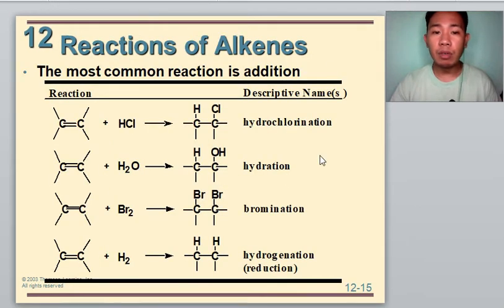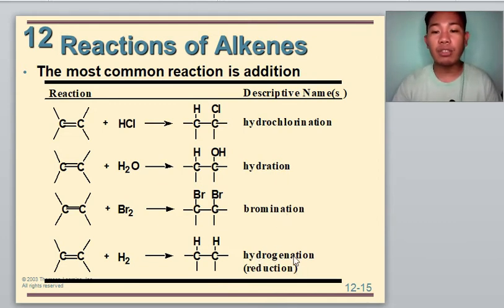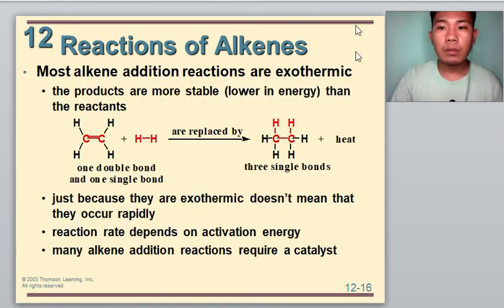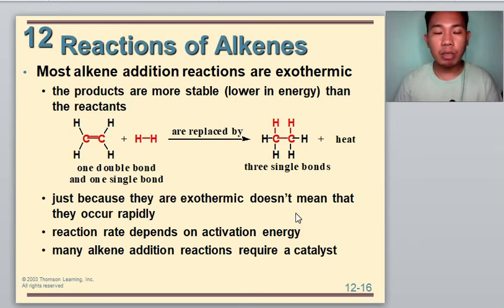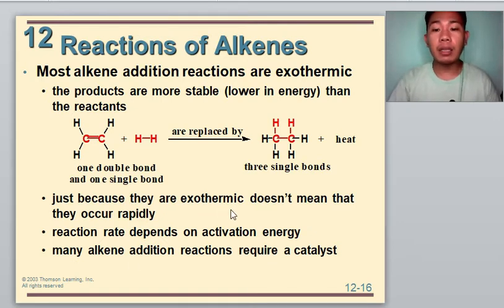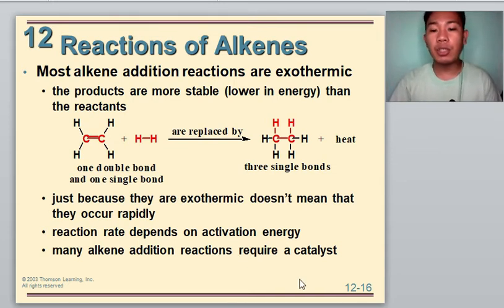Let's move on to the reactions of alkenes. In summary, we have hydrochlorination, hydration, bromination, and hydrogenation or the reduction reaction. The reactions of alkenes are most probably exothermic, meaning they produce heat during the reaction. Just because they are exothermic, however, doesn't mean they occur rapidly — reactions may depend on activation energy, and many alkene addition reactions require a catalyst.